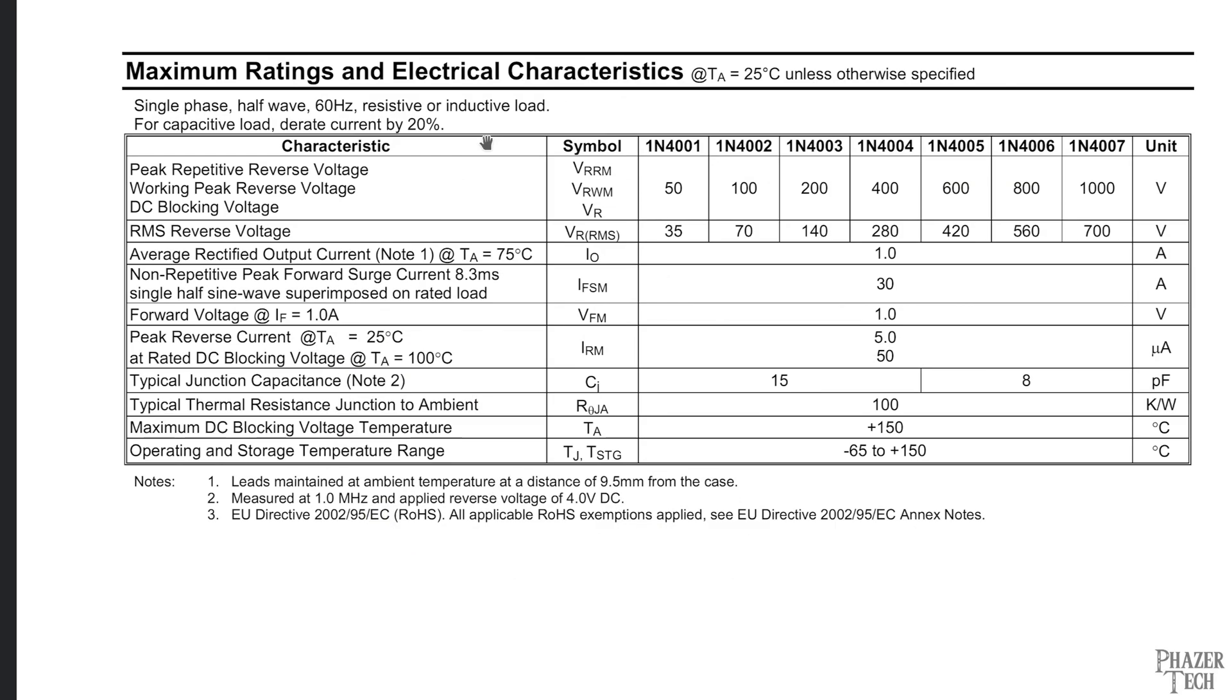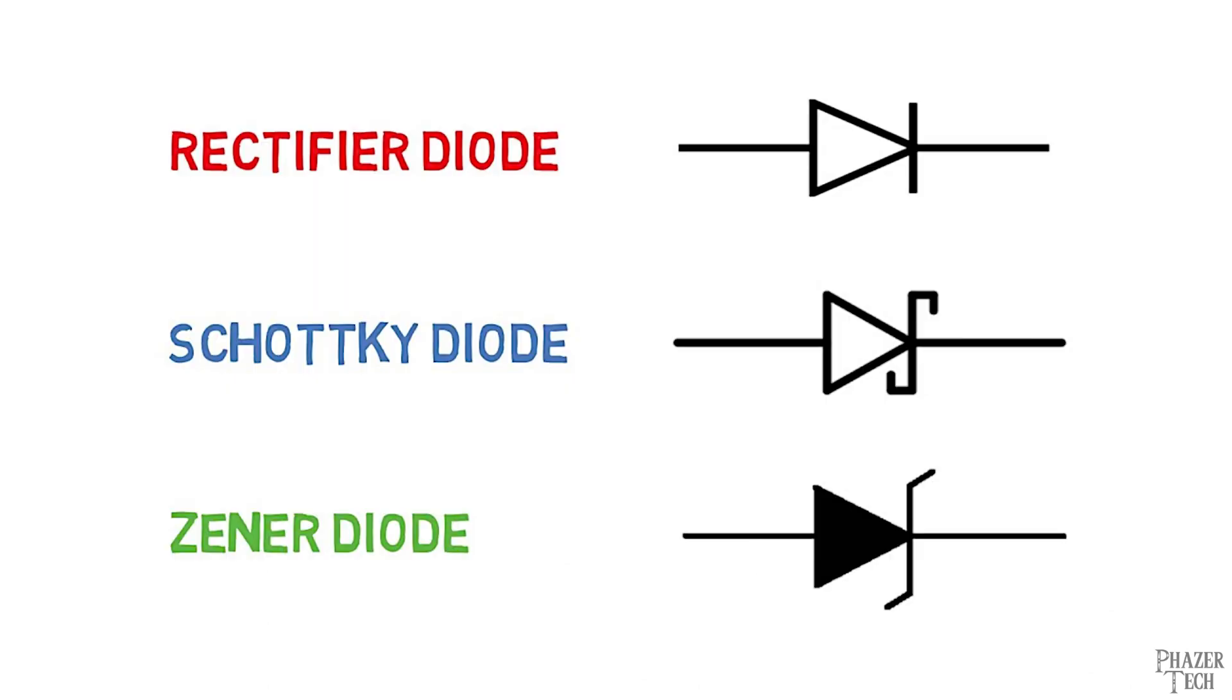The voltage drop will also vary according to temperature and how much current is flowing through it. These are just a few important specs to keep in mind when looking for a diode that will fit your specific needs. But not only are there different models with slight variations, there's also completely different types or classes of diodes. The 1N4000 diodes in the datasheet I just showed are considered rectifier diodes. These are pretty much the same as signal diodes, except rectifier diodes can handle more power.